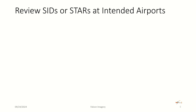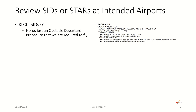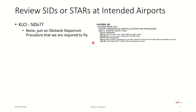We also want to make sure we review any SIDS or STARS at the intended airports. KLCI has no SIDS, but they do have an obstacle departure procedure that we are required to fly. If an airport has an ODP, you must fly it as part of your IFR flight plan. At Laconia Airport: runway 8, climb to 2,500 feet via heading 079 on the Kennybunk VOR radial 315, then to 3,500 feet before proceeding on course. If taking off runway 26, climb to heading 2640 to 2,500 feet before proceeding on course. We definitely want to fly one of those two out of Laconia.